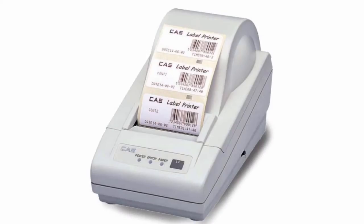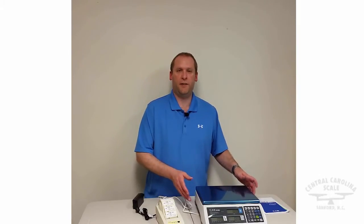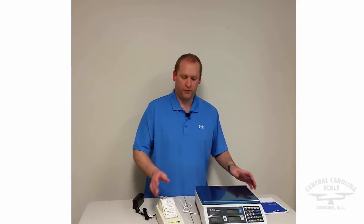However, it's also very easy to add a CAS DLP50 label printer to this system. All you need to do is make one change in the settings so that they'll communicate. In today's video, we're going to show you how to make that one change so that this becomes a plug-and-play system.